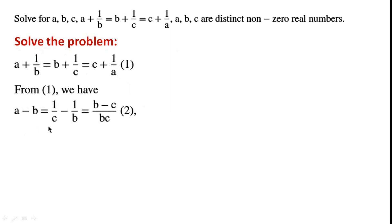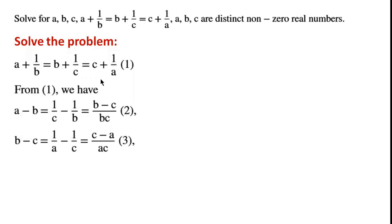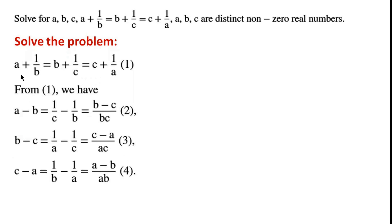From the last two algebraic expressions, we have B minus C equals 1 over A minus 1 over C equals C minus A over AC. From the first and third algebraic expressions,